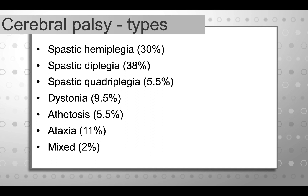The most common types are spastic hemiplegia and spastic diplegia by far — over two-thirds of children with cerebral palsy experience spasticity, and it's either hemiplegic or diplegic, with a smaller number experiencing spastic quadriplegia. Nearly three-quarters of children have spastic cerebral palsy affecting either one side or all four limbs. We do see dystonia or athetosis in about 10 to 15% of children — that fluctuating tone associated with injury to the basal ganglia. Ataxia involves the cerebellum. There can also be a mixed form, such as mixed spastic and dystonic, but that's a very low percentage.